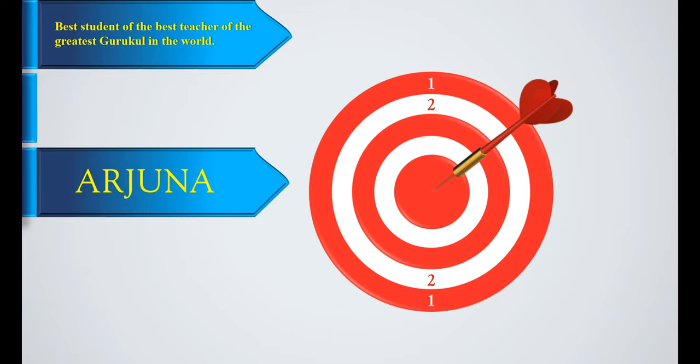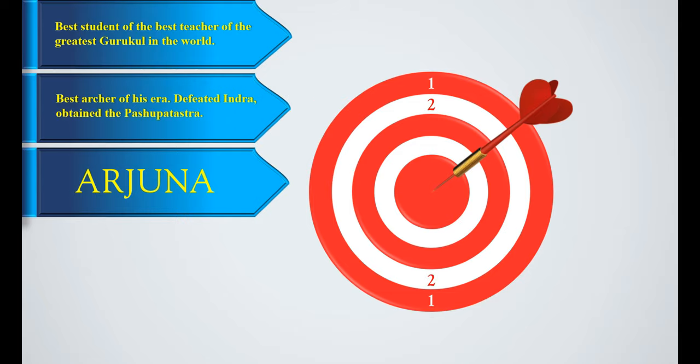He defeated Indra and obtained the Pashupat Astra also. He fought with Lord Shiva, and we know how much he was successful in his archery endeavors. Arjuna told Krishna in the battlefield of Kurukshetra,